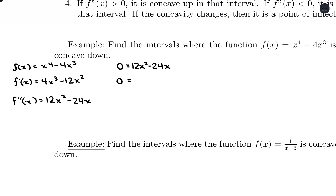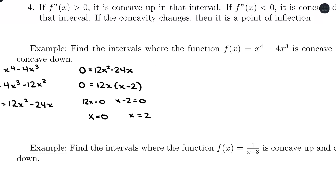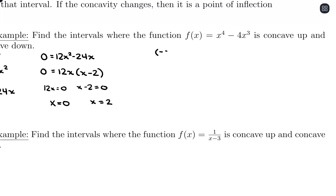Setting 12x² − 24x = 0 and factoring out 12x gives 12x(x − 2) = 0. So we have inflection points at x = 0 and x = 2 — not 1.5 as expected, but x = 2. With those values, we set up intervals: negative infinity to 0, 0 to 2, and 2 to infinity.